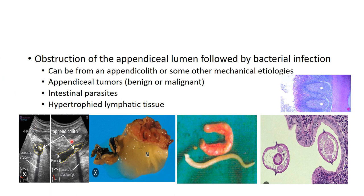Regarding etiology — as you can see in this X-ray, there is fecalith material inside the appendix. If the fecalith increases in size, it can obstruct the lumen and inflame the mucosa, leading to appendicitis. Another important cause is appendiceal tumors — benign or malignant growths that obstruct the lumen and lead to inflammation. The third cause is intestinal parasites such as Ascaris and Enterobius vermicularis, which can also obstruct the appendiceal lumen.